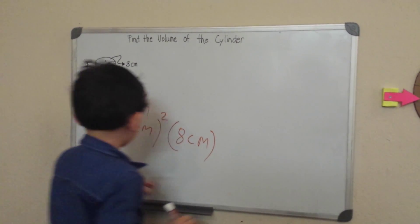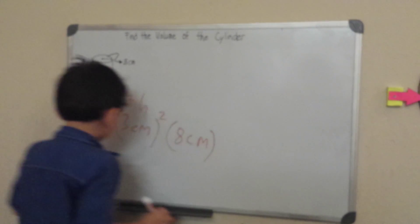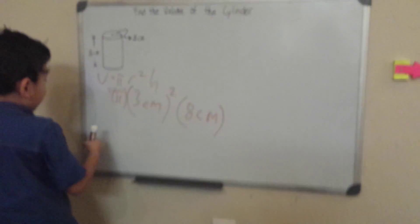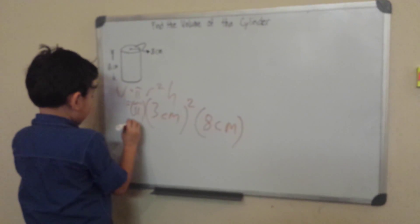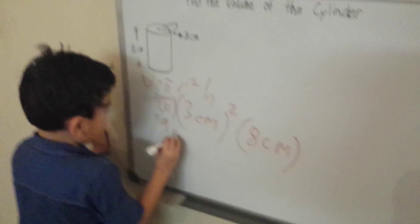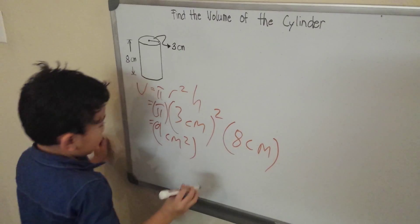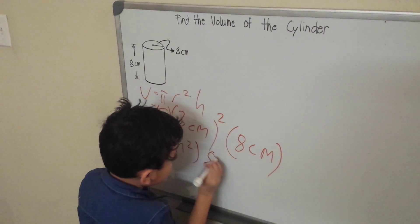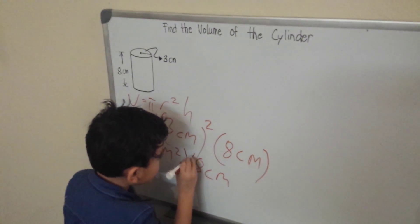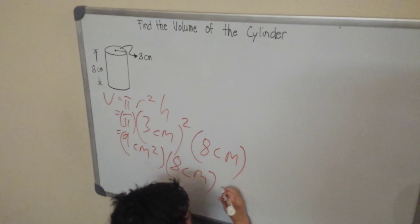So let's move our pi to the end and then let's simplify the exponent. So 3 times 3, which is 9cm squared. Then our 8cm, and then our pi.